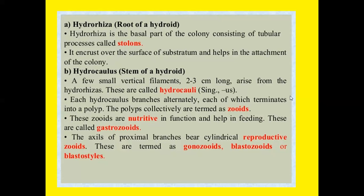The hydrorhiza, commonly known as the root of the hydroid, is a basal part of the colony consisting of tubular processes called stolons. It encrusts over the surface of the substratum and helps in attachment of the colony. The hydrocaulus, commonly known as the stem, consists of small vertical filaments two to three centimeters long arising from the hydrorhiza. Each hydrocaulus branches alternately, each of which terminates into a polyp. The polyps collectively are termed zooids.